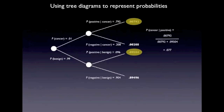And the answer, of course, is the same: 0.077. It's really just the same calculation. All that's different is that we've explicitly represented all possibilities in this tree diagram.